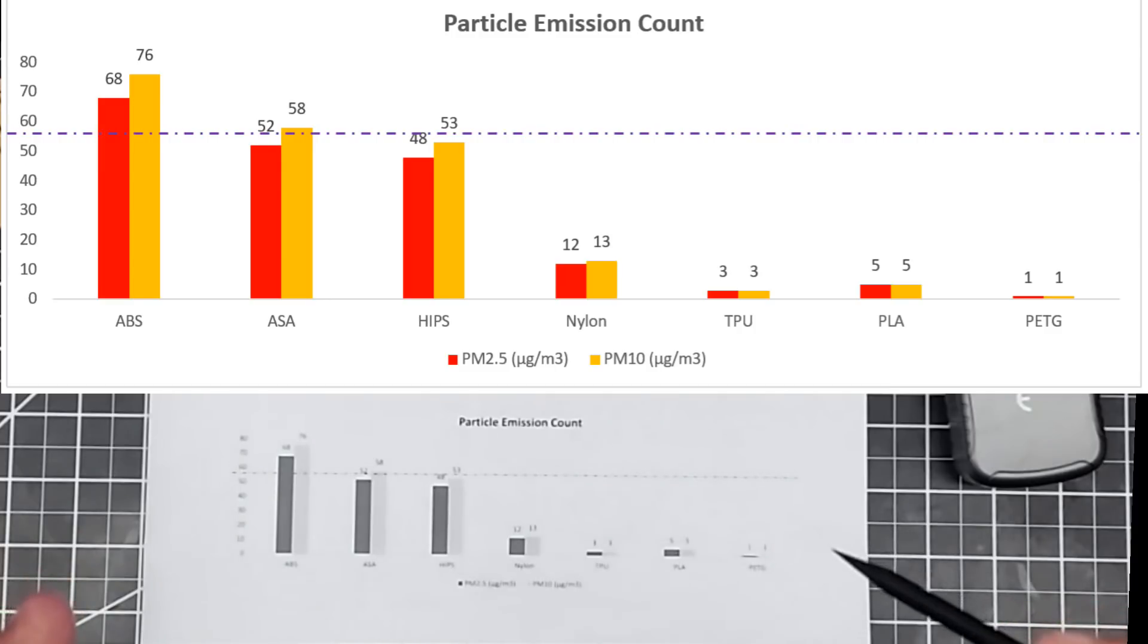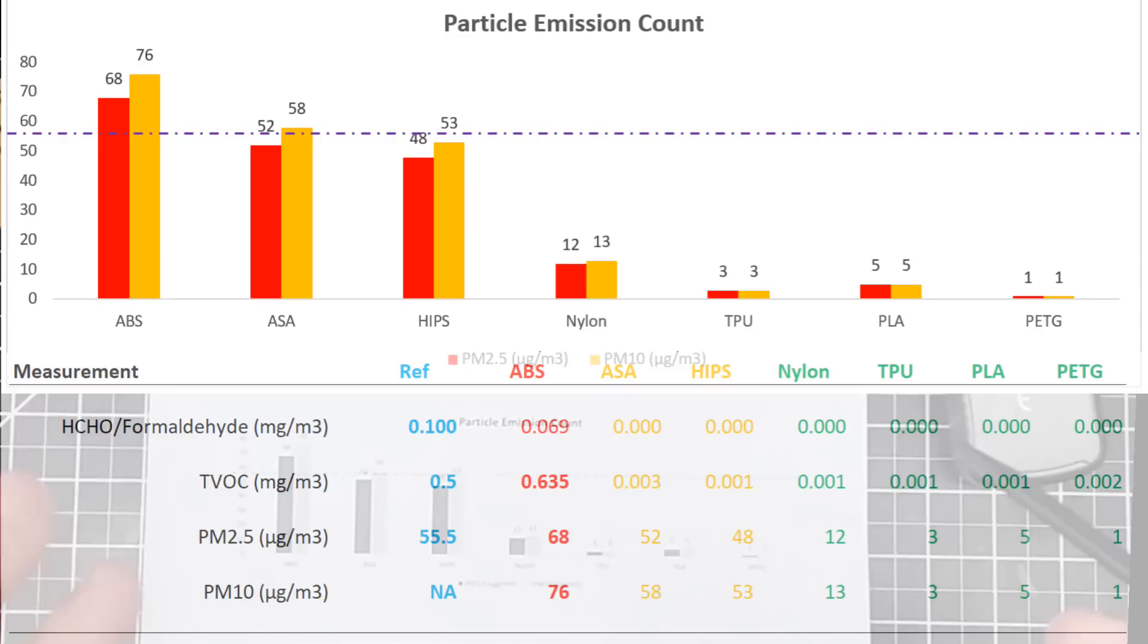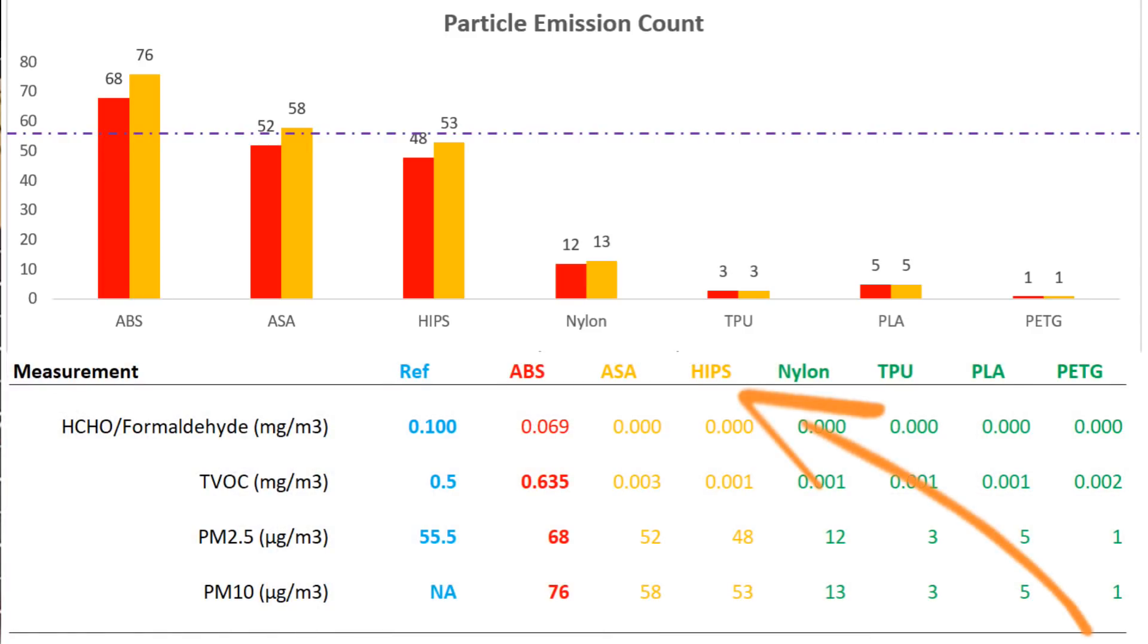The next one is HIPS. And again, HIPS, cousin to ABS and ASA, pretty much the same as far as particulate release, a little bit less than ASA and ABS, but still right up there.